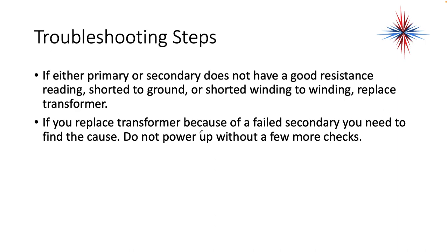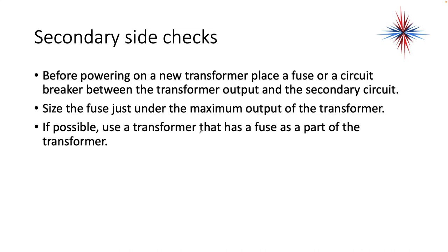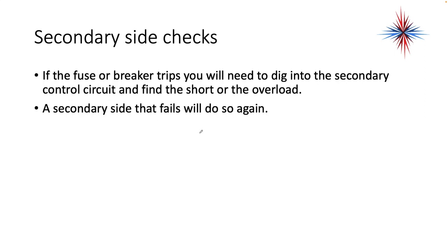If either the primary or secondary does not have good resistance readings — shorted to ground or shorted winding to winding — replace the transformer. If you replace the transformer because of a failure on the secondary side, you need to find the cause; do not power the system up without further checks. Before powering on a new transformer, place a fuse or circuit breaker between the transformer output and the secondary circuit, sized just under the maximum output of the transformer. If possible, use a transformer that has a fuse or breaker built in. If the fuse or breaker trips, dig into the secondary control system and find the short or overload. A secondary side that fails will do so again because there's a problem somewhere — these don't fail on their own.